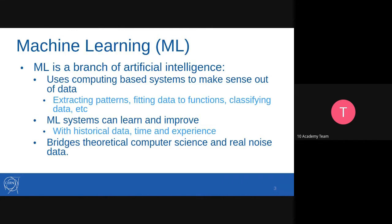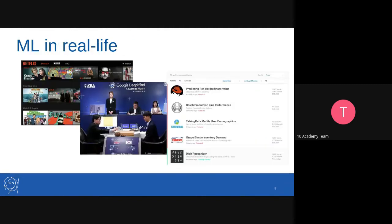Machine learning is a branch of artificial intelligence that uses computing-based systems to make sense out of data. What machine learning does is it tries to extract patterns and fit data to functions, classify data, and so on. Machine learning systems can learn and improve with historical data, time, and experience. Based on given data, a machine learning system can learn, find patterns, calculate feature importance, and make predictions — whether classification, regression, or any other type of output.